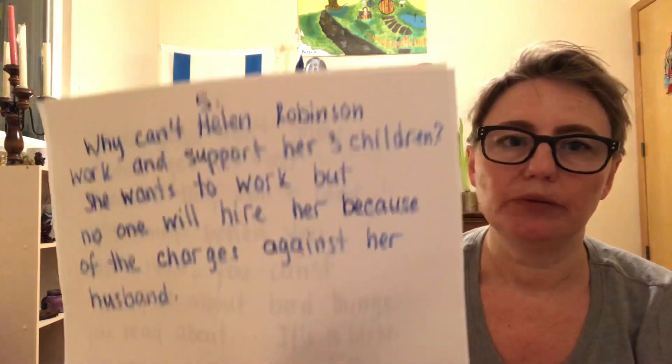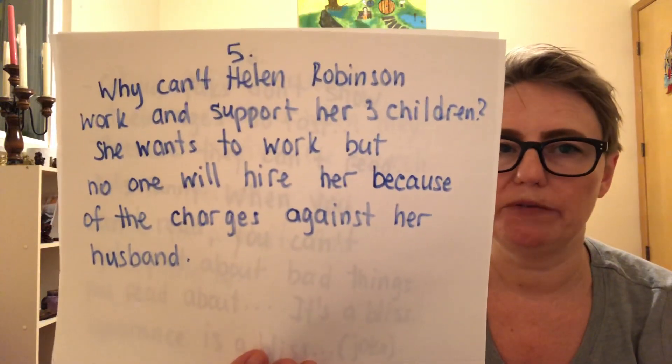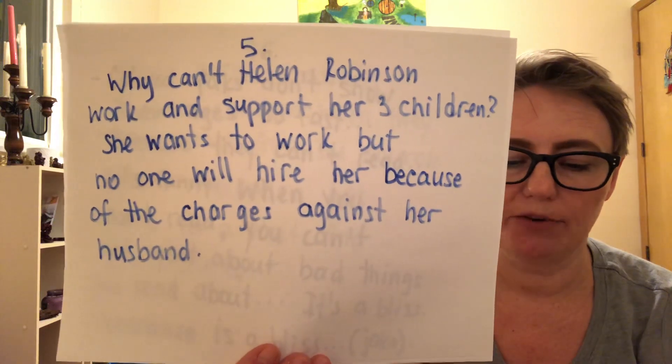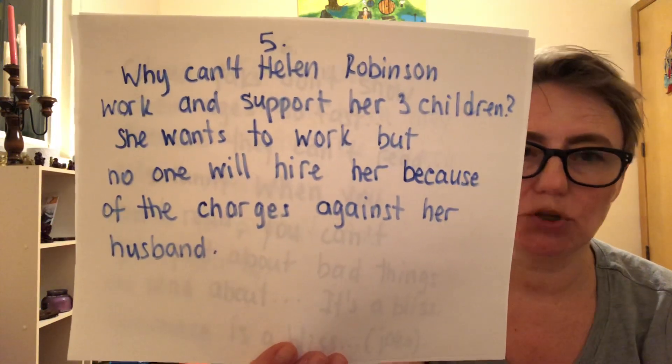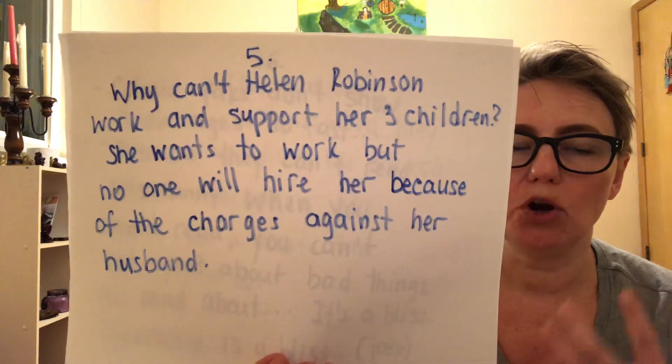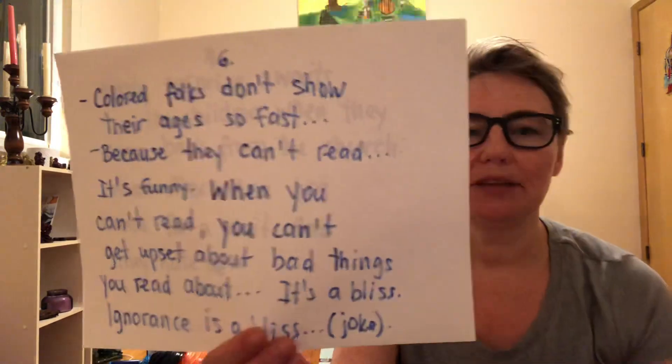Later on, when Tom Robinson was taken to prison, nobody wanted to give his wife a job. She could not feed her children — not because she didn't want to work, but because nobody would hire her. Most people didn't want to take her on because her husband had been accused of such a terrible thing.